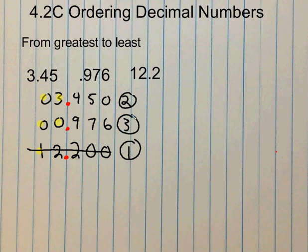So when I'm ordering these decimals, my largest is going to be 12 and 2 tenths. My next largest is going to be 3 and 45 hundredths. And my smallest is 976 thousandths.